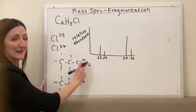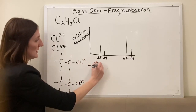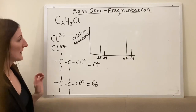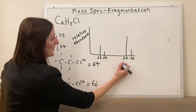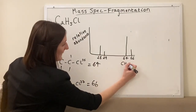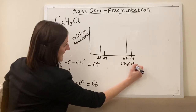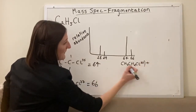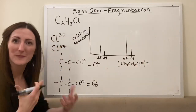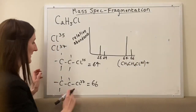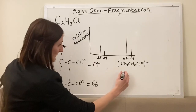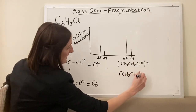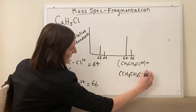If we add together all the atoms here it equals 64, and if we add together all the atoms here it equals 66. So our 64 was caused by CH3CH2Cl-35 — remember we have to say that it's positive for it to be detected by our mass spec — and this one at 66 would be CH3CH2Cl-37.